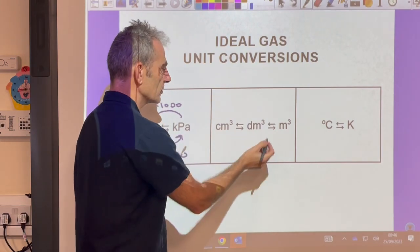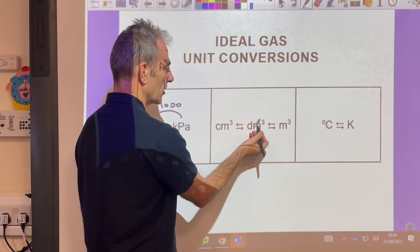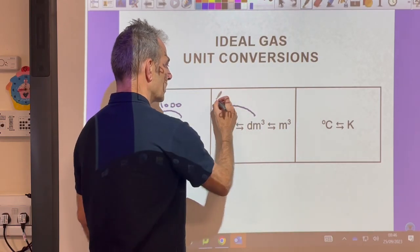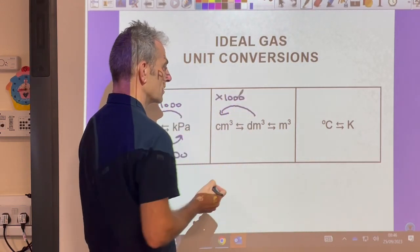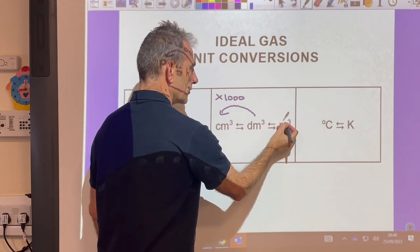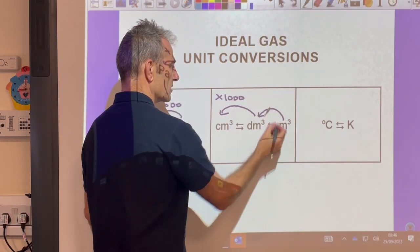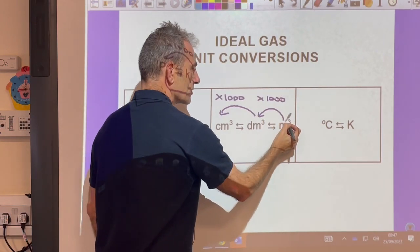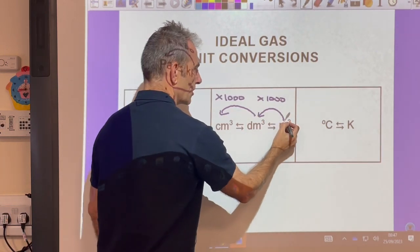Moving on to volume. I always start with dm³. If you've got one dm³ and you want to put it into cm³, you've got a thousand centimeters cubed. If you're going from meters cubed to decimeters cubed, you multiply by a thousand. If you want to go straight from meters cubed to centimeters cubed, you multiply by a million, 10 to the 6.